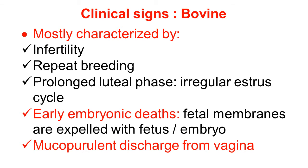Here we discuss the clinical signs of bovine campylobacteriosis in cattle and buffaloes. The most characteristic symptoms are infertility, repeat breeding, prolonged luteal phase, and irregular estrous cycles. There is early embryonic death, and the fetal membranes are expelled with the fetus or embryo, making it difficult to diagnose. There is a mucopurulent discharge from the vagina. These clinical signs indicate great losses to animal reproduction and thereby affect production, making this disease very important from a gynecological and production standpoint.